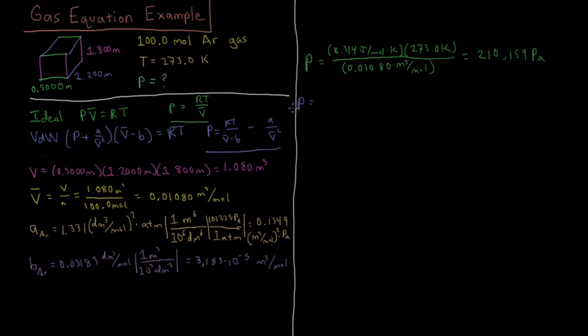According to the Van der Waals equation of state, we have RT, again 8.314 joules per mole Kelvin and temperature 273.0 Kelvin, divided by V̄ is 0.01080 meters cubed per mole minus B, which we have as 3.183 × 10⁻⁵ meters cubed per mole. That's our first term.